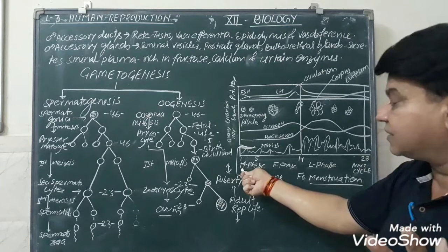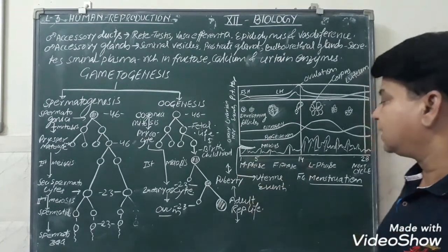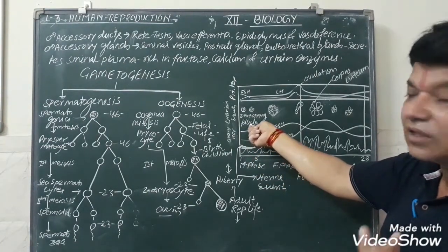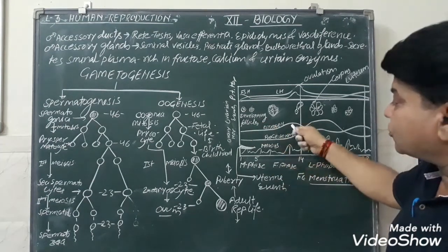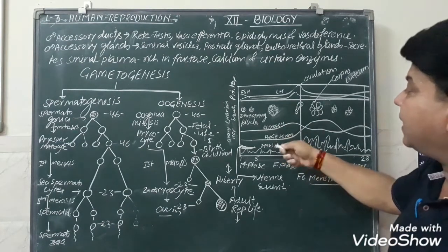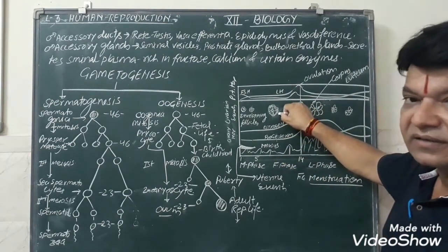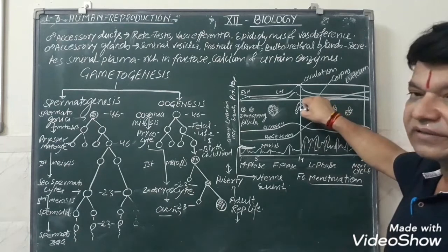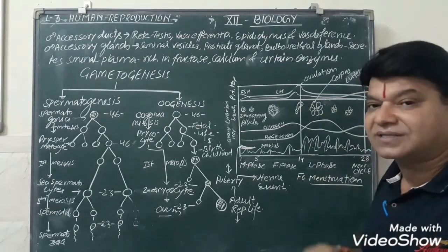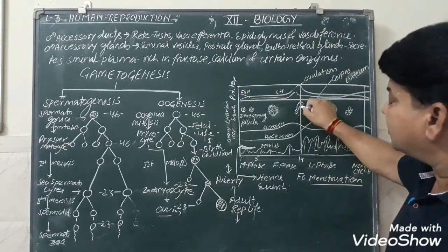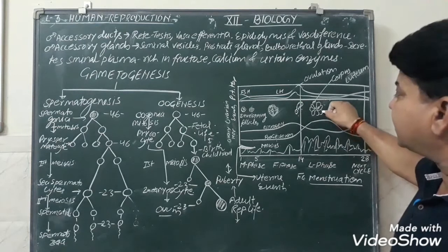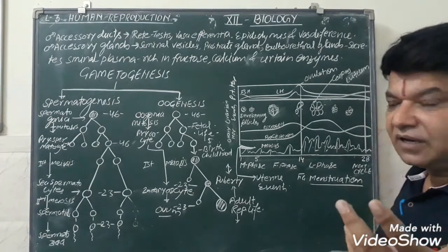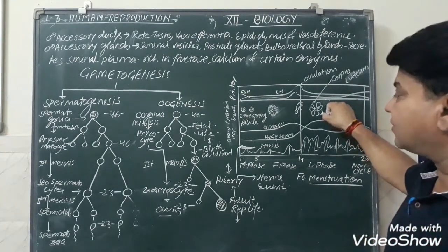At the time of the menstrual phase, from day one to day five, developing follicles develop inside the ovary. Then estrogen and progesterone are also released from the ovary. This developed follicle, after 14 days, undergoes ovulation. During ovulation, only one ovum is released from the follicular cells, and the remaining part of the follicle gets converted into the corpus luteum.